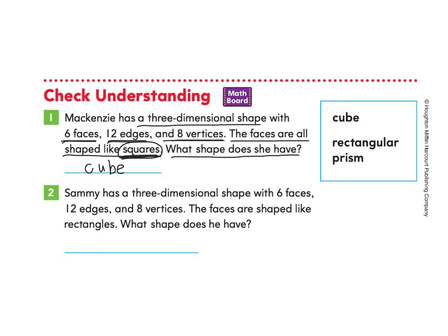Now let's look at number two. Sammy has a three-dimensional shape with six faces, 12 edges, and eight vertices, and the faces are all shaped like rectangles. What shape does he have — cube or rectangular prism? From working in this lesson, we know the answer is rectangular prism because all of the faces are shaped like rectangles: six faces, 12 edges, and eight vertices. Nice job. As always, you can go back and re-watch this video and pause any time as needed.